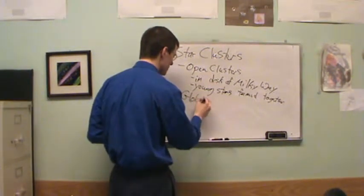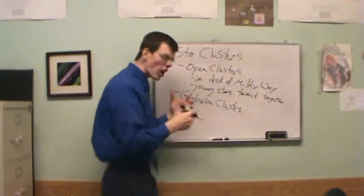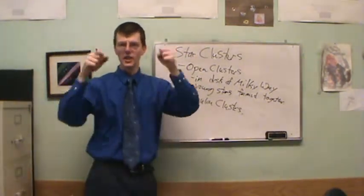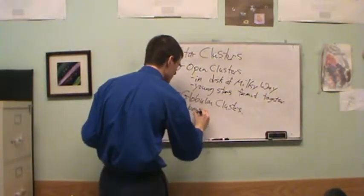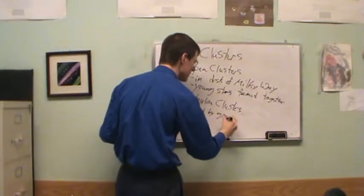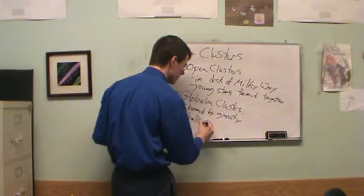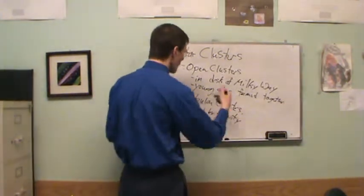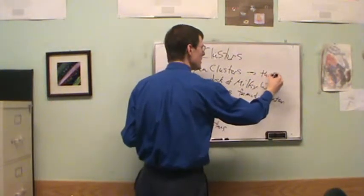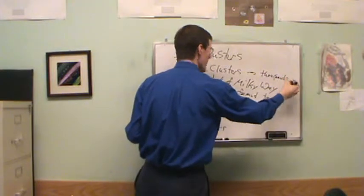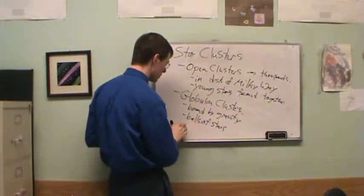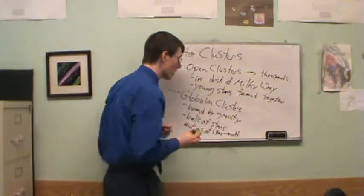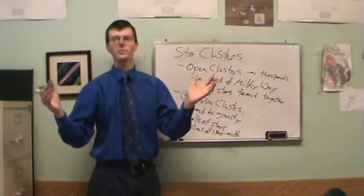The other type of star clusters are globular clusters. These are tightly bound balls of stars held together by gravity, sprinkled around in the halo of our galaxy. Open clusters typically contain hundreds to thousands of stars, while globular clusters contain hundreds of thousands to millions of stars, and tend to be fairly old.